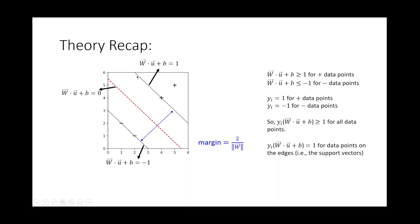For the upper margin, close to the positive samples, it is w dot u plus b equals one. On the other side symmetrically, close to the negative samples, it is w dot u plus b equals minus one. The margin — the width of the street between this edge to this edge — is denoted as 2 divided by the magnitude of vector w.